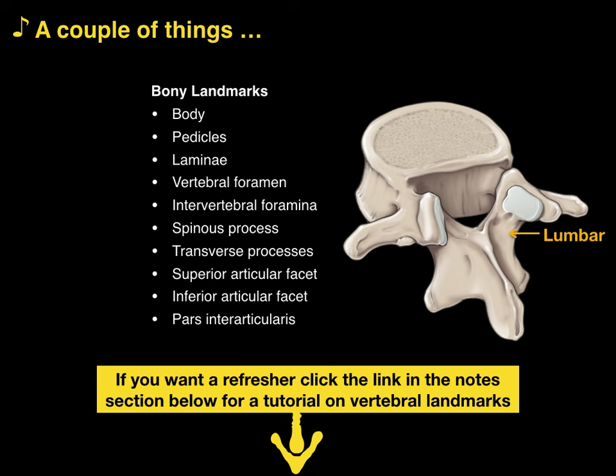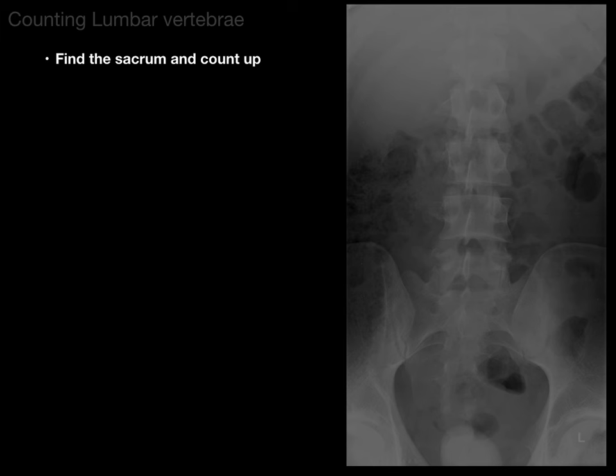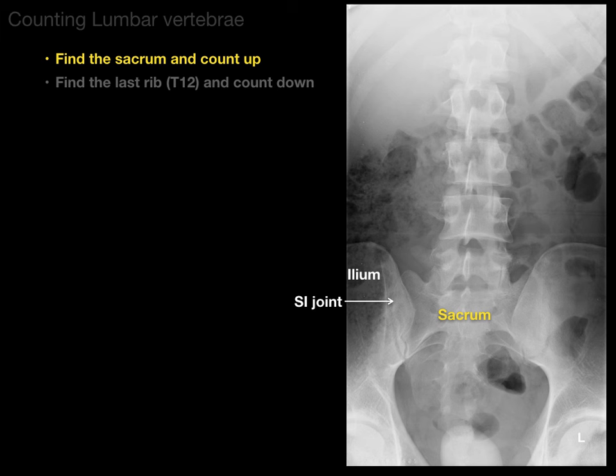So, counting lumbar vertebrae. You can find the sacrum and count up, or you can find the last rib which shows the T12 vertebra and count down. Let's do first: find the sacrum and count up. There's our sacrum, there's the ilium, and there's the sacroiliac joint in between. If you find the sacrum, then you know where L5 is, and you find L5, you know L4, L3, L2, and L1 vertebrae.